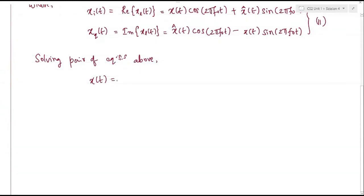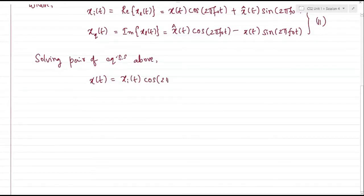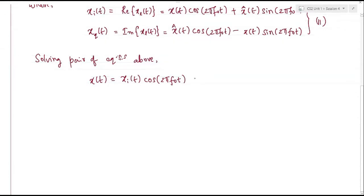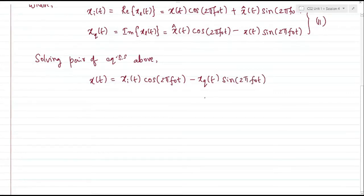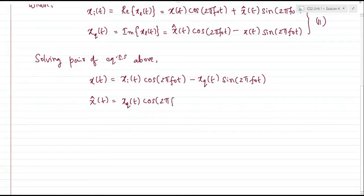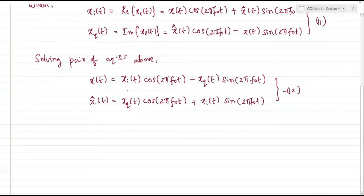Solving the pair of equations, I can express x(t) in terms of xi and xq as: x(t) = xi(t)cos(2πf₀t) − xq(t)sin(2πf₀t). Similarly, x̂(t), the Hilbert transform of x(t), is: x̂(t) = xq(t)cos(2πf₀t) + xi(t)sin(2πf₀t). Let me call this equation number 12 for future reference. Equation 12 shows that any band pass signal x(t) can be expressed in terms of two low pass signals: xi(t) and xq(t).